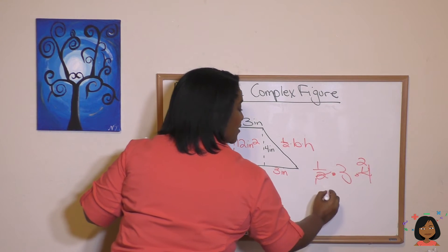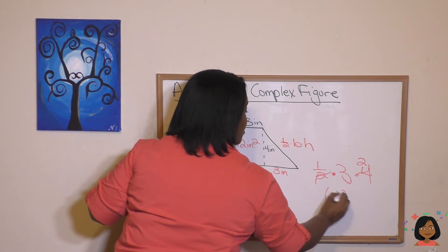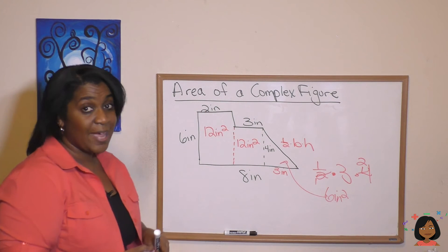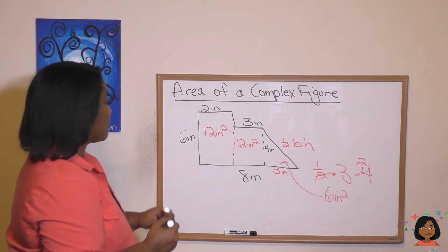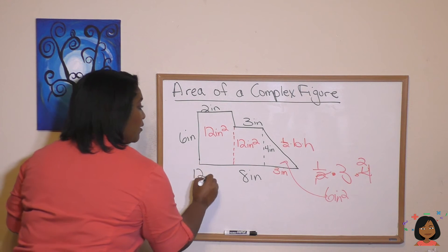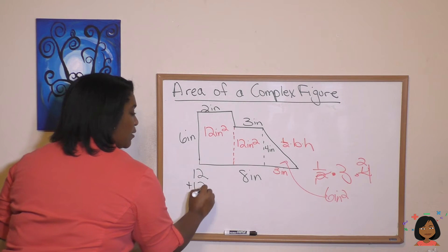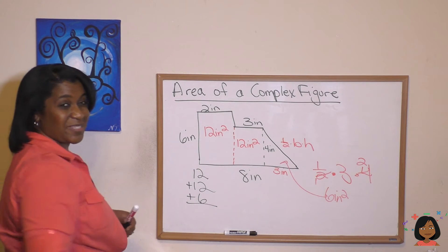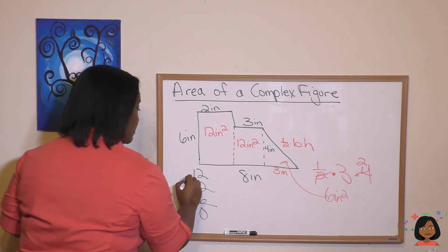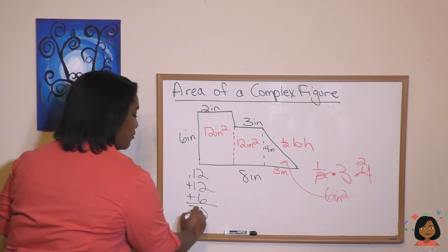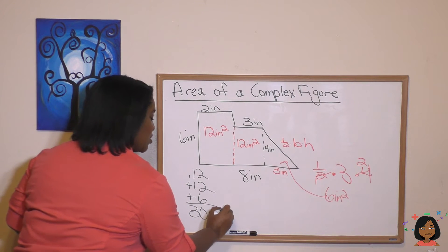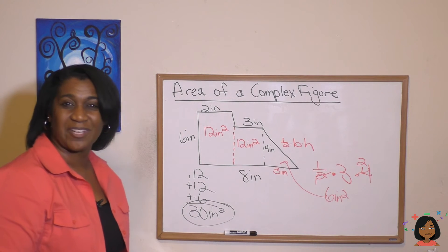And I'm left with six inches squared for this piece. All I have to do now is add them together. 12 plus 12 plus six. Six and two is eight. Eight and two is 10. One, two, and three. So 30 inches squared is the area of this complex figure.